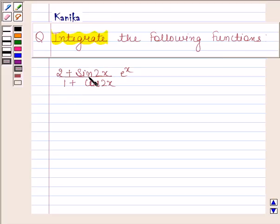Given function is 2 plus sine 2x by 1 plus cos 2x into e to the power x. Let's now begin with the solution.